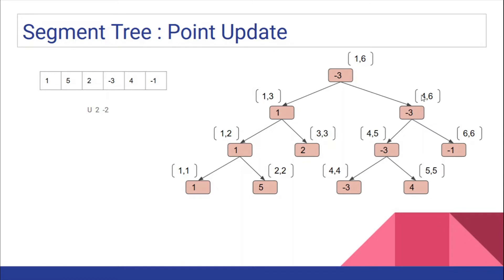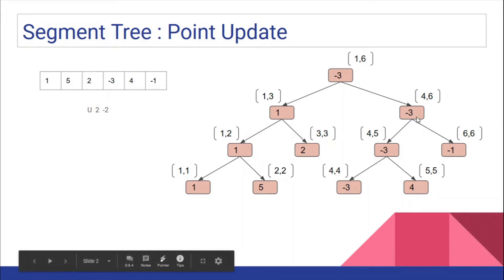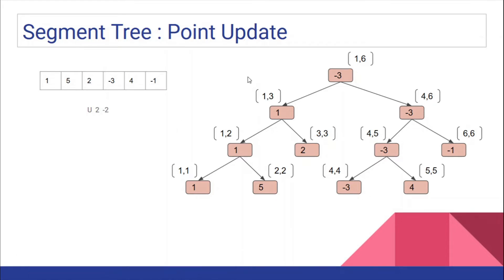The whole segment tree is not going to change. For example, the node storing the result for range 4 to 6 — since the element is not changed in that range, none of those nodes would be affected. The only nodes affected are those on the path from the updated leaf upward. Since index 2 was changed, range [2,2] would be updated, and range [1,2] which depends on [2,2] would also be affected.